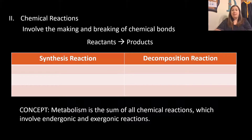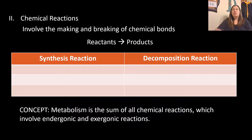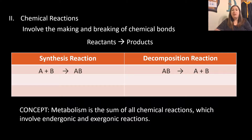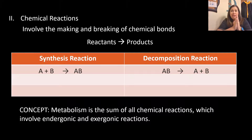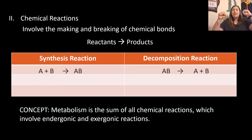Now let's talk about chemical reactions — they involve making and breaking chemical bonds. Reactants are what go into a chemical reaction; products are what come out. There are two main types: synthesis and decomposition. In synthesis reactions, we build things — we take A and B and build them into AB. In decomposition reactions, we start with AB and break it apart into A plus B.